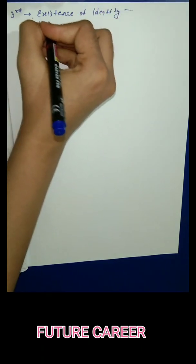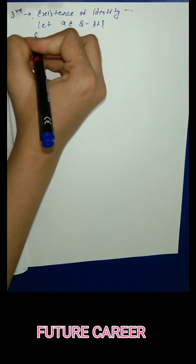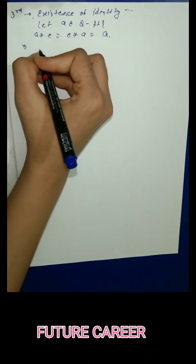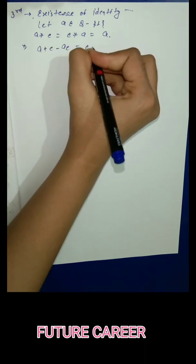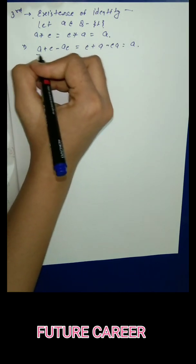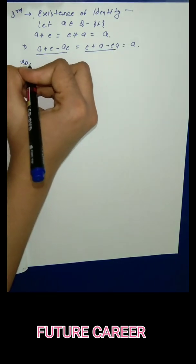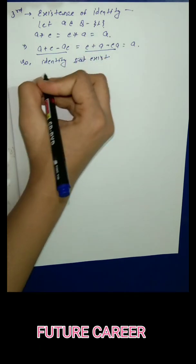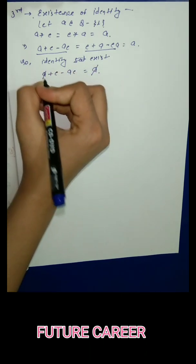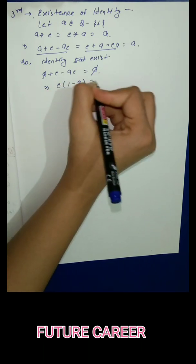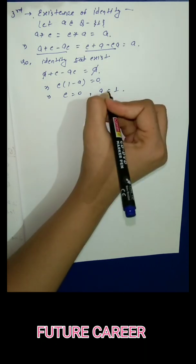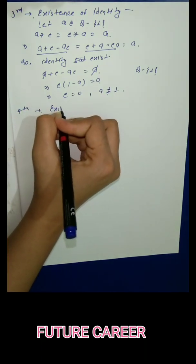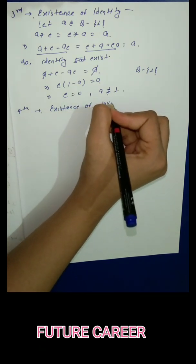Third property: Existence of Identity. Let a belong to Q-{1}, then a★e = e★a = a. Applying star property: a+e-ae = a, so e-ae = 0, e(1-a) = 0, giving e = 0 (since a ≠ 1 as we have Q-{1}). So identity e = 0 exists.